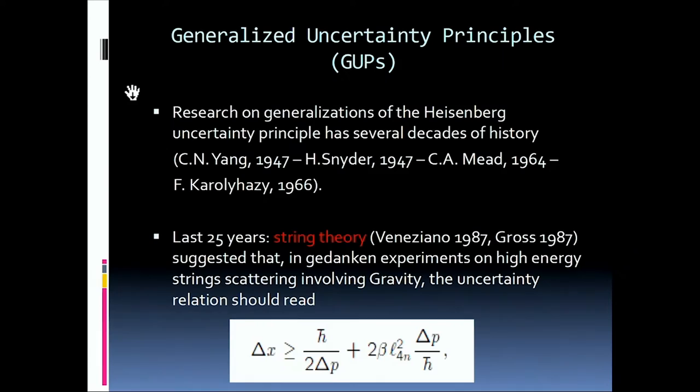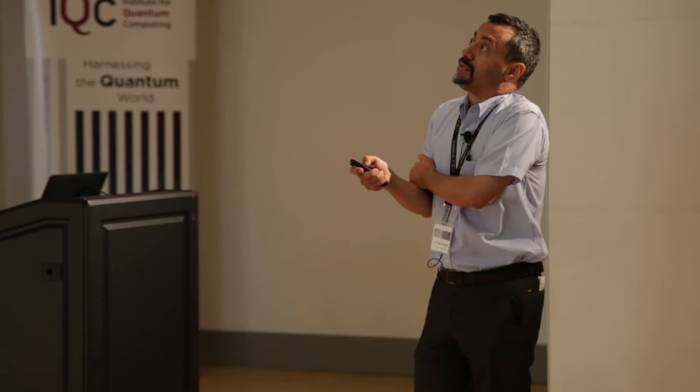First, just a short introduction to generalized uncertainty principles. We can say that probably the first paper on this topic has been written by Sien Yang in 1947, and then Snyder, and then in the 60s, Mead and Carollasi. And then about 25, 30 years ago, string theory entered this topic with fundamental papers of Veneziano and Gross.